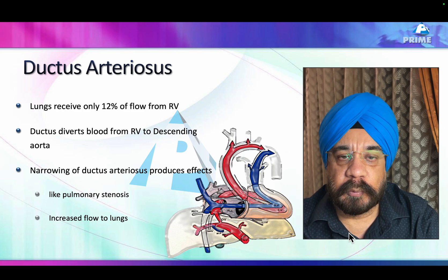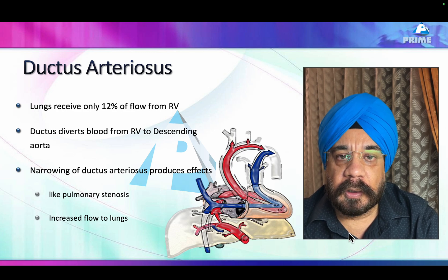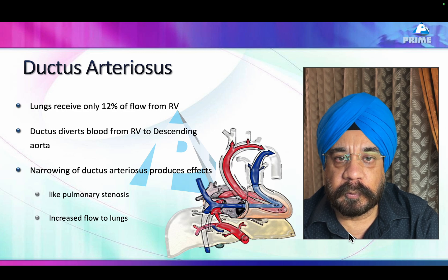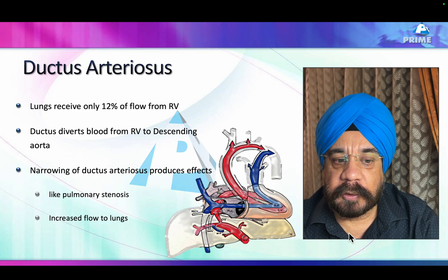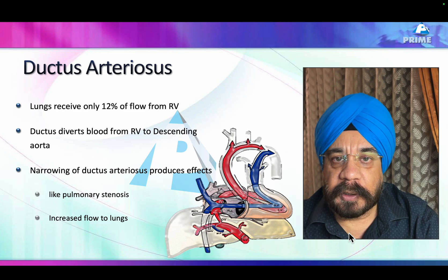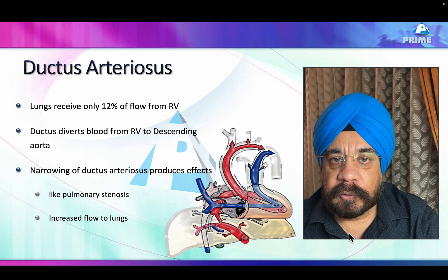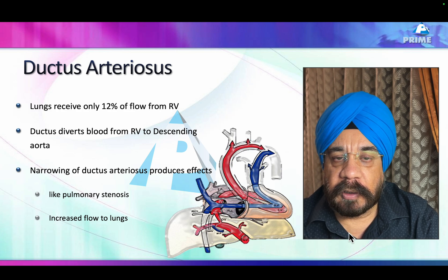What does the ductus do? The ductus is supposed to divert blood from the right ventricle into the descending aorta. The RV in the fetus provides only 12% of output to the lungs; the remaining 88% goes to the descending aorta through the ductus. If the ductus is narrowed for any reason, it produces a situation like pulmonary stenosis, and it would also increase flow in the lungs.